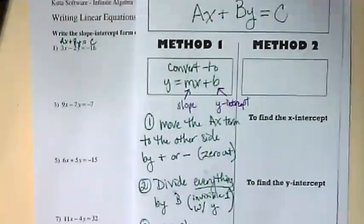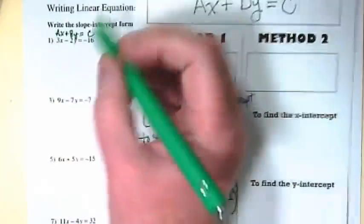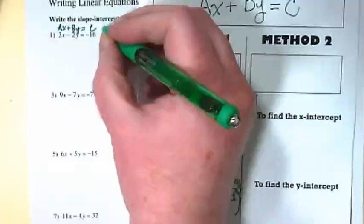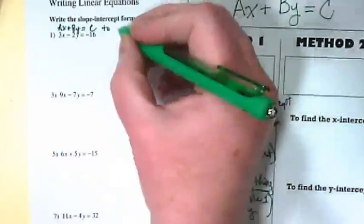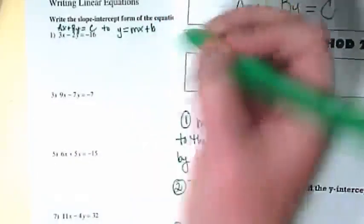Let me zoom in a bit. So our first step to convert this in slope-intercept form, where we're trying to get from ax plus by equals c, to y equals mx plus b, lowercase b.